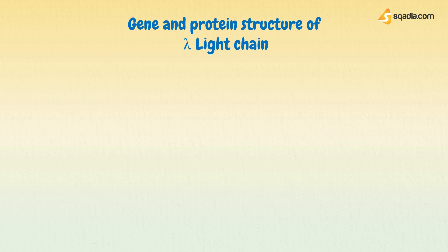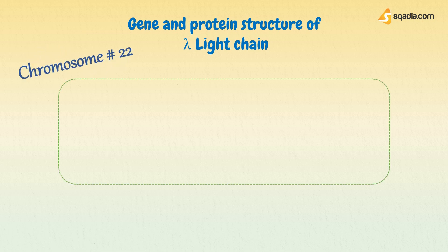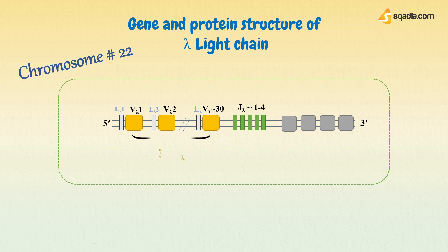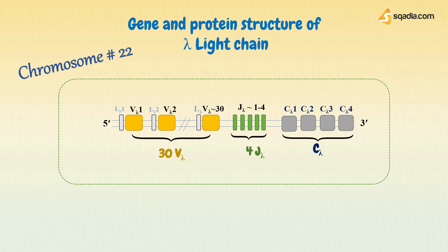So this was the complete synthesis of the kappa light chain. The process of gene recombination is similar for lambda chain genes as well, except that lambda gene segments are found on chromosome number 22. Its variable region is coded for by about 30 V lambda and four J lambda gene segments, while the constant region is encoded by C lambda genes. Each of the J lambda genes is associated with a different C lambda gene — C lambda 1, C lambda 2, C lambda 3, or C lambda 4. Consequently, four different subtypes of lambda light chain are possible in humans.